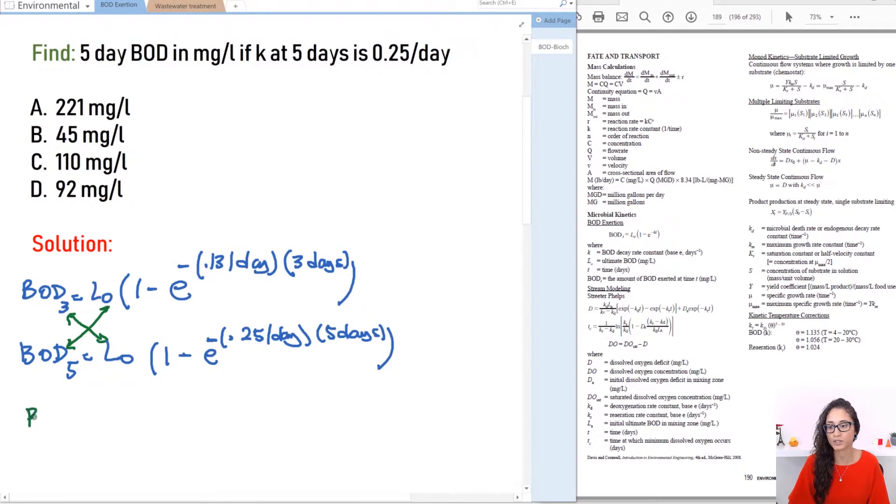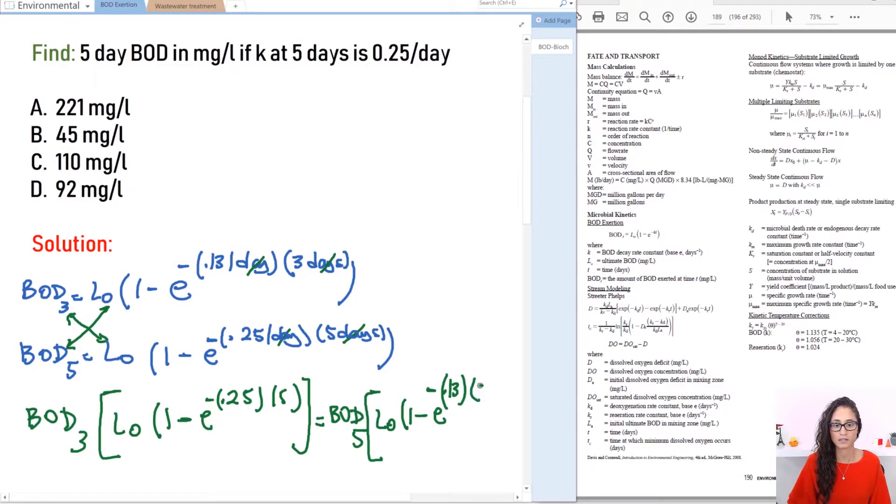So we have BOD three times this term. So I have L0 times 1 minus E to the power of minus 0.25 times five. I'm not going to write the units anymore because they cancel with this so they just cancel. So this term is equal to BOD at five days times again we have L0 times 1 minus E to the power of minus 0.13 times three.